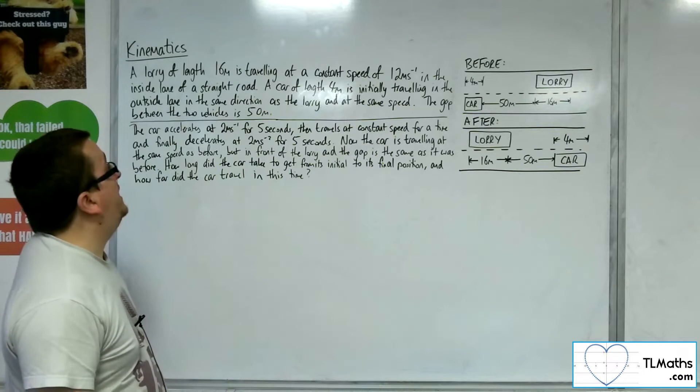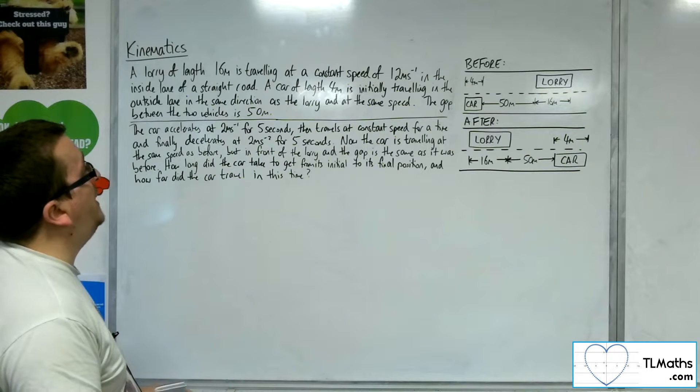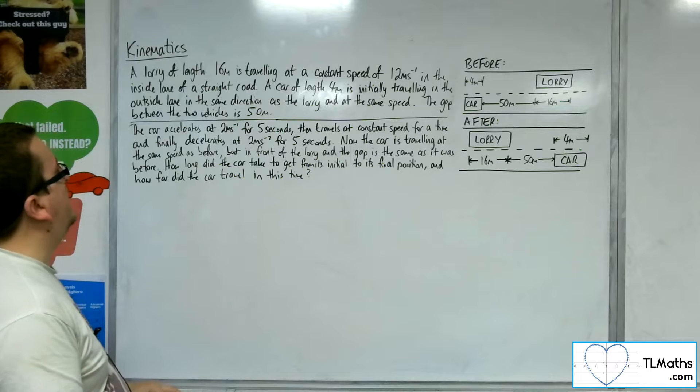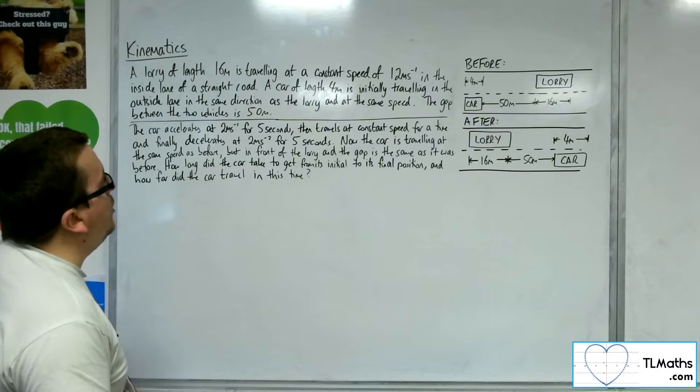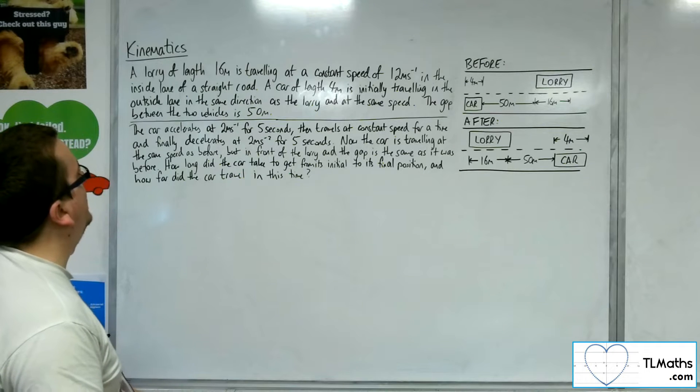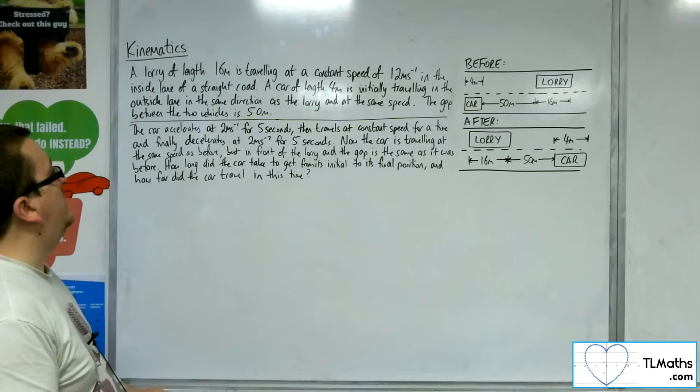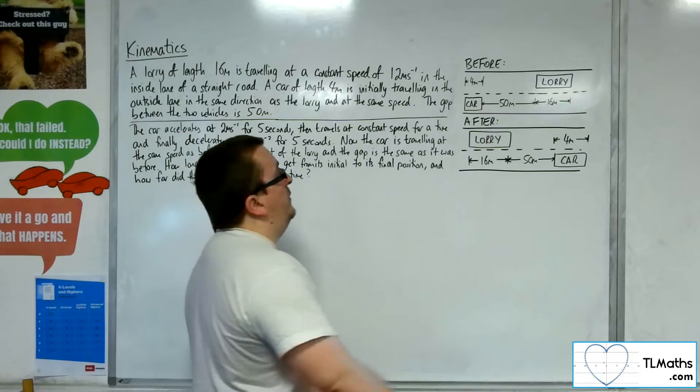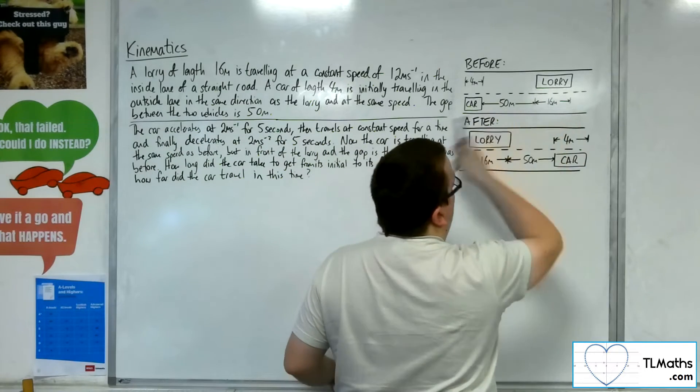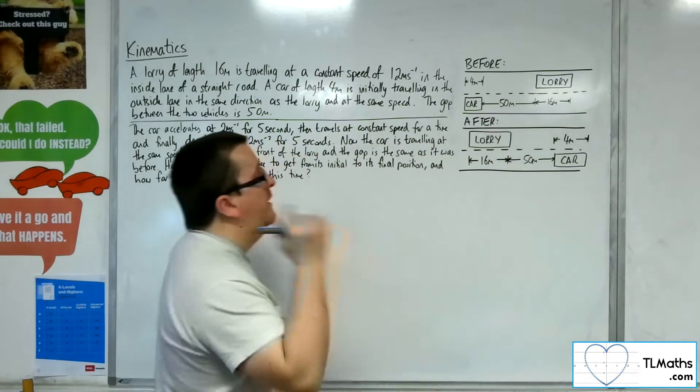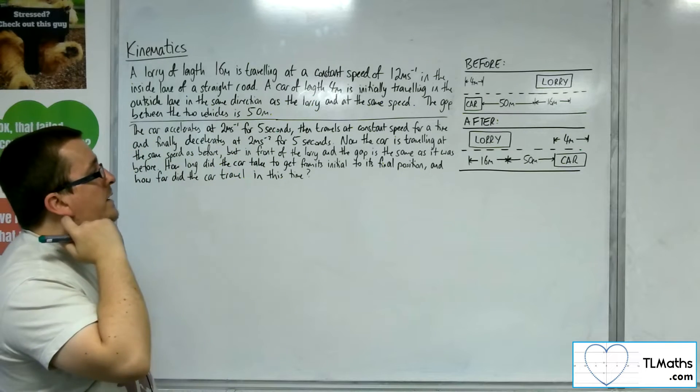We've got a lorry of length 16 metres travelling at a constant speed of 12 metres per second in the inside lane of a straight road. A car of length 4 metres is initially travelling in the outside lane in the same direction as the lorry and at the same speed. The gap between the two vehicles is 50 metres. So we've got the lorry and the car, they're both travelling from left to right, and the car is 50 metres behind the lorry.